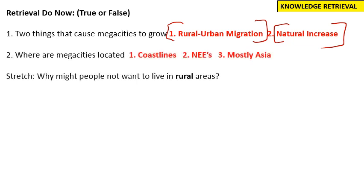Second question: where are megacities located? Most of them are located on coastlines because that is where there are ports, where goods that are manufactured can be exported to countries around the world. So cities have grown next to coastlines because that's where factories are most useful. NEEs — newly emerging economies — are countries where there are lots of megacities, and most of these are in Asia.